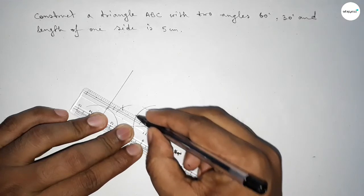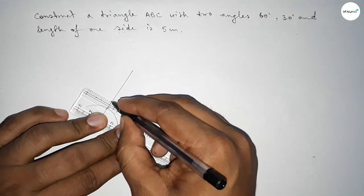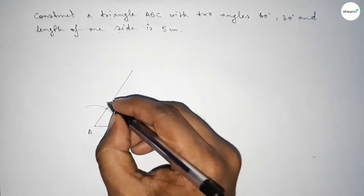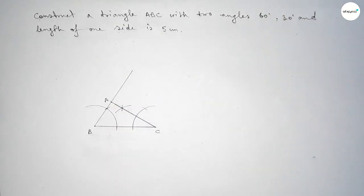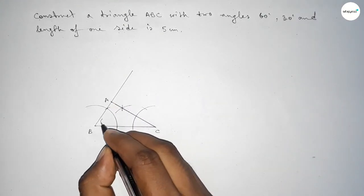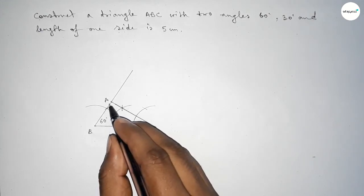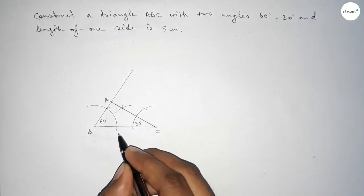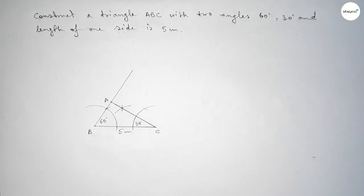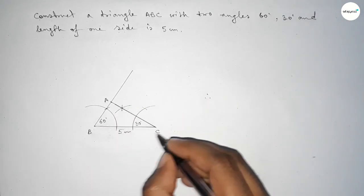Both the lines intersect at a point A. So this is 60 degree angle and this is 30 degree angle, and this is obviously 90 degree angle. And this side is 5 centimeters.